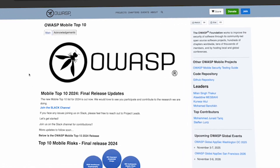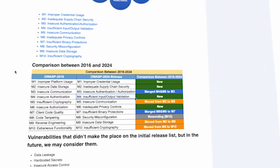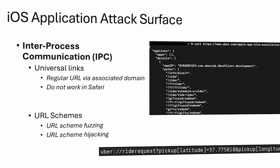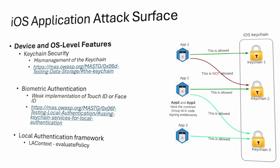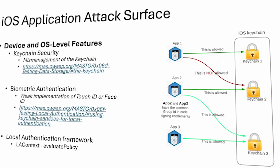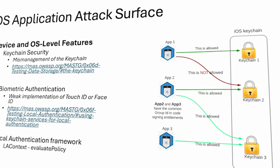Module 4 focuses on the iOS application attack surface. We cover OWASP mobile security risks, input validation, secure network communication, data storage vulnerabilities, and code security best practices. We will also explore third-party libraries, inter-process communication, and OS-level security features like biometric authentication and keychain security.